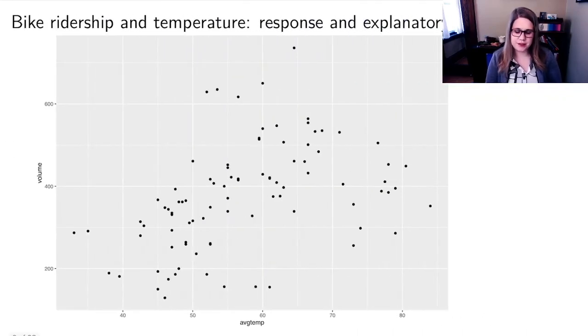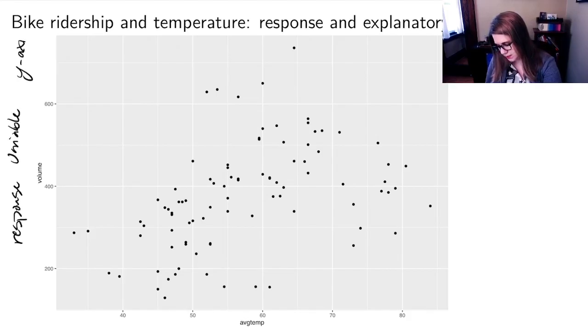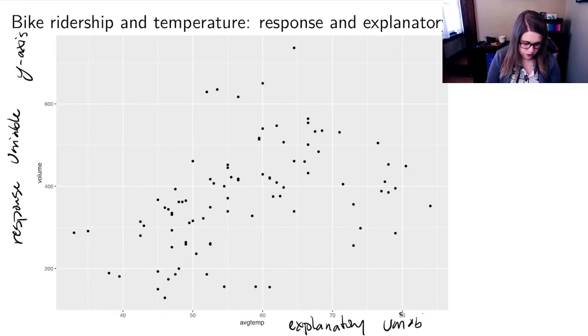So I could look at a scatterplot to think about the relationship between these two variables. And when we are talking about a scatterplot, we typically put the response variable on the y axis. So the thing that we are most interested in that we want to see if we can explain, in this case the volume, the number of people on the rail trail. And then we put our explanatory variable on the x axis. So in this case, I think that the average temperature might explain something about the volume of bike riders on the bike path.